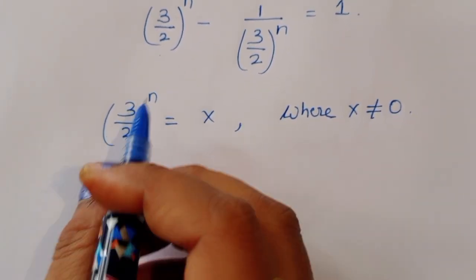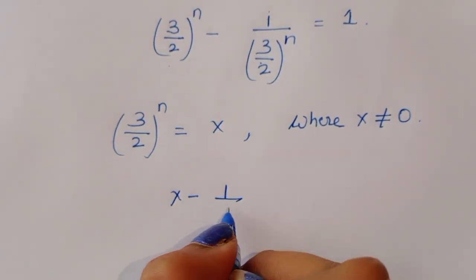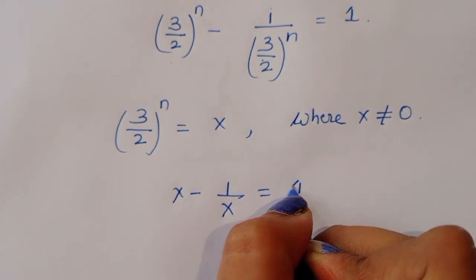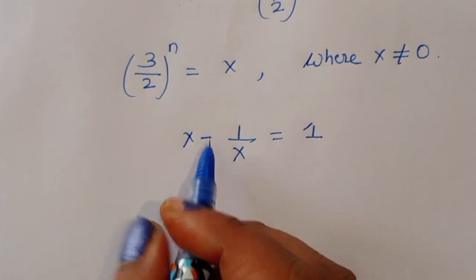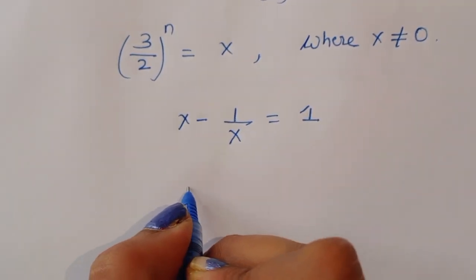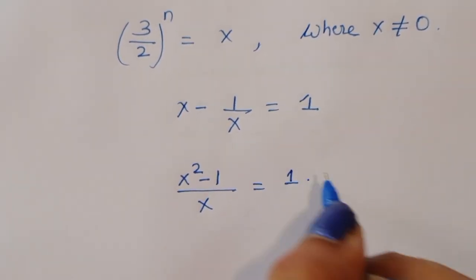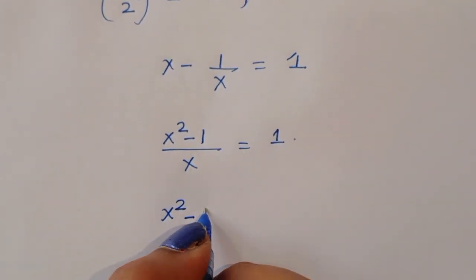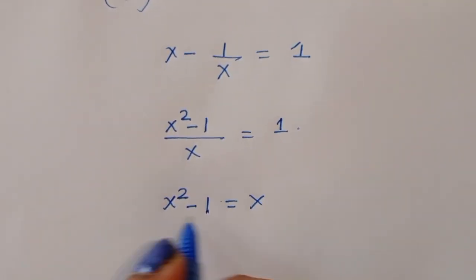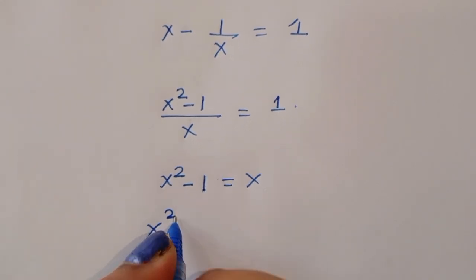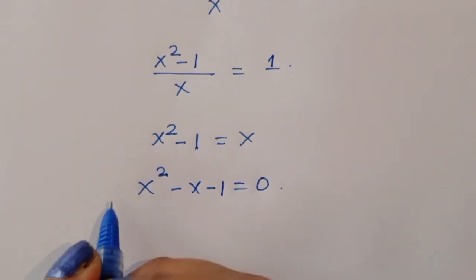Let x equal (3 upon 2) power n, where x is greater than 0. Then we can write x minus 1 upon x is equal to 1. Taking LCM, we get x squared minus 1 upon x equals 1. By cross multiplication, x squared minus 1 equals x, and arranging gives x squared minus x minus 1 is equal to 0.